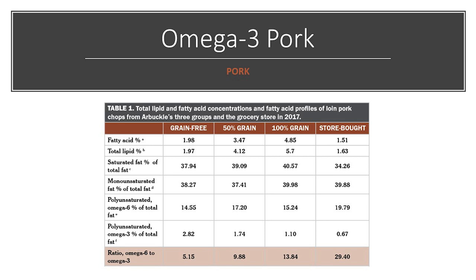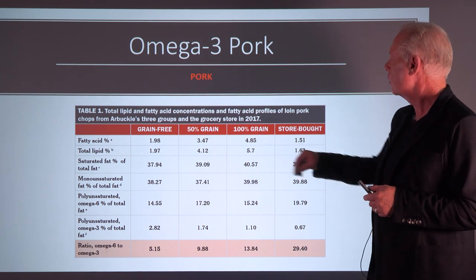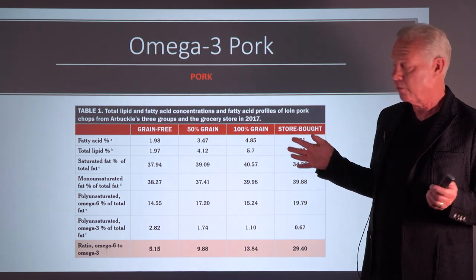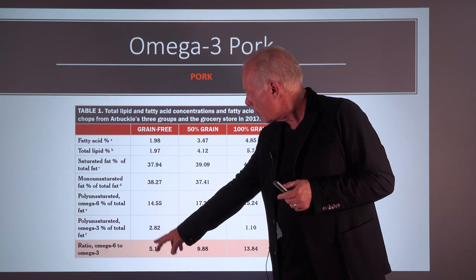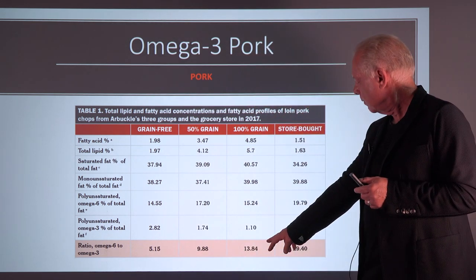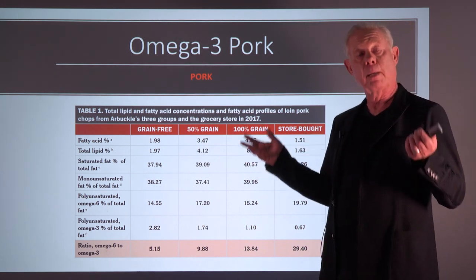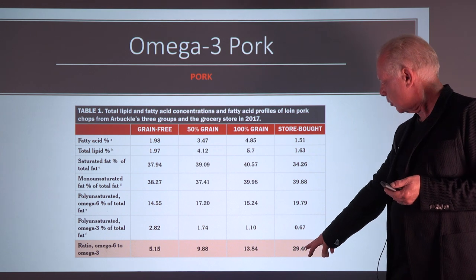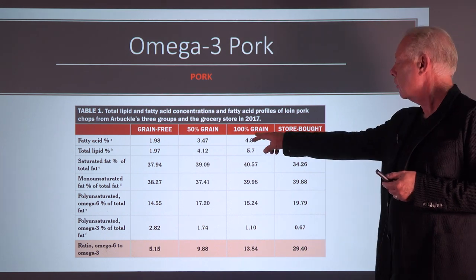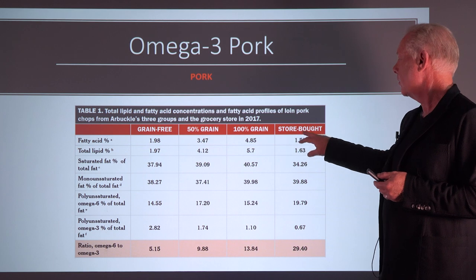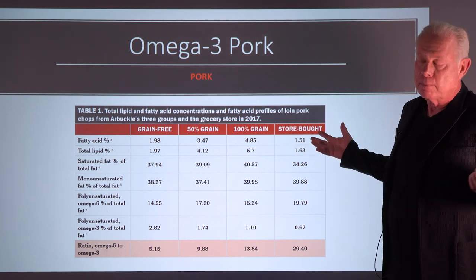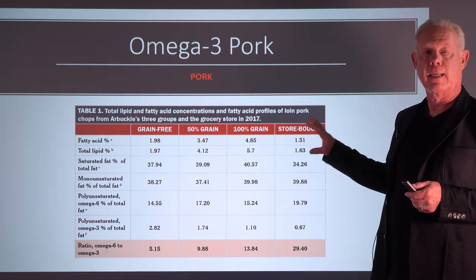Pork follows the same pattern. One farm compared grain-free, 50% grain, and 100% grain-fed pigs, showing ratios of 5-to-1, 10-to-1, and 14-to-1 respectively. Store-bought pork was 30-to-1. Chickens are fed grains too, but normally they run free in grass, eating bugs and worms. When cooped up on a farm, they lose that natural diet.